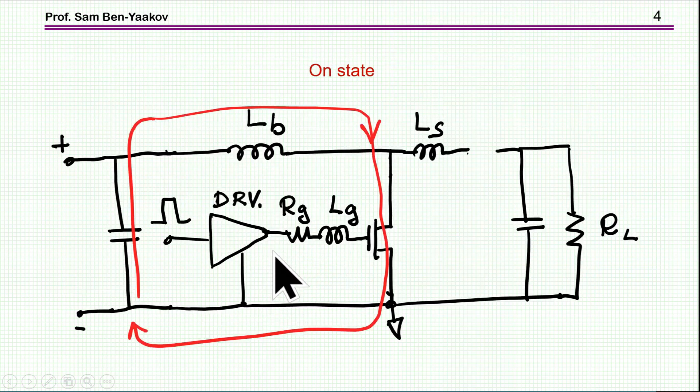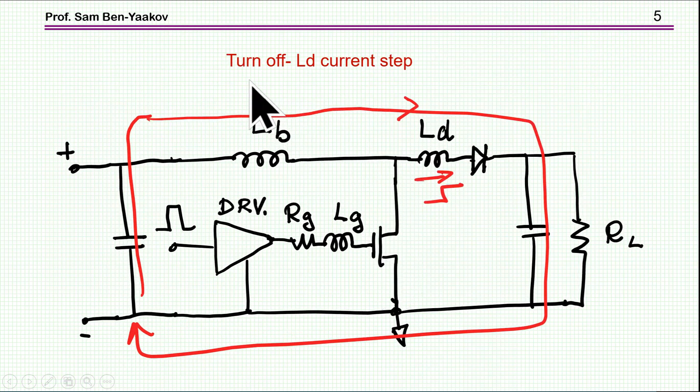Now I'm turning to another case, which is this stray inductance. I'm showing here first the ON state in which the transistor is conducting. The current is passing through the main inductor. And then during the turn-off, this current will sort of push itself into this stray inductance and the diode.